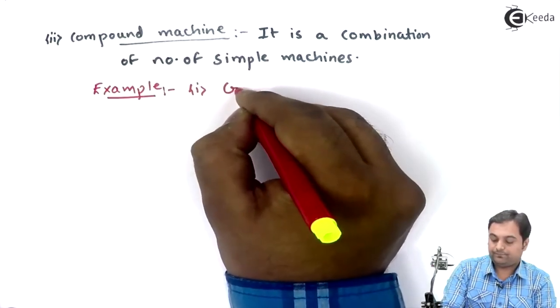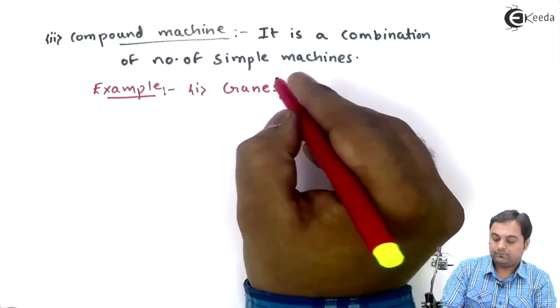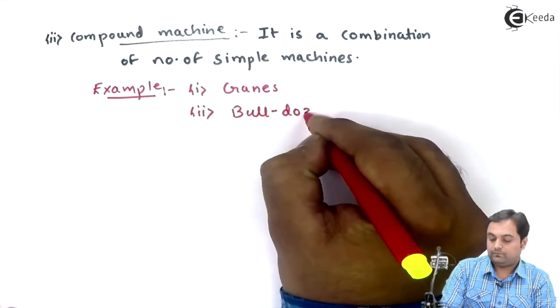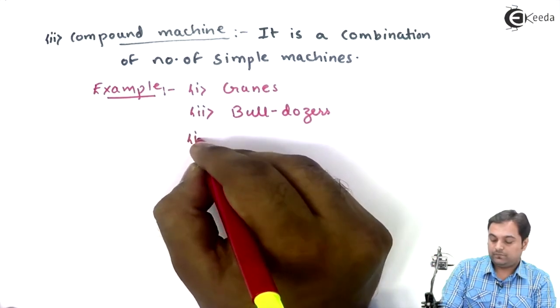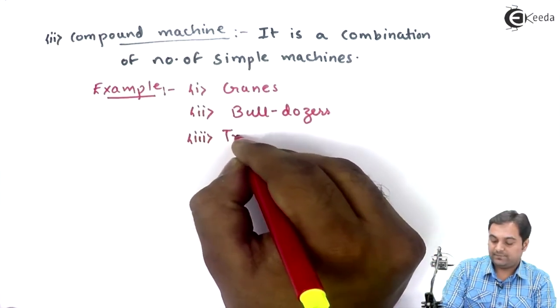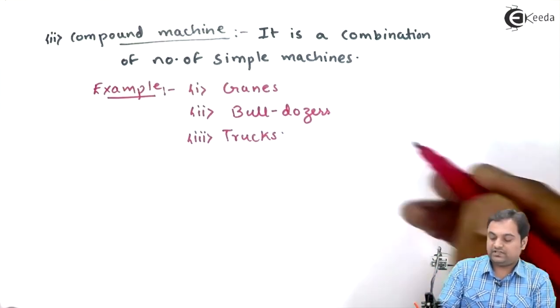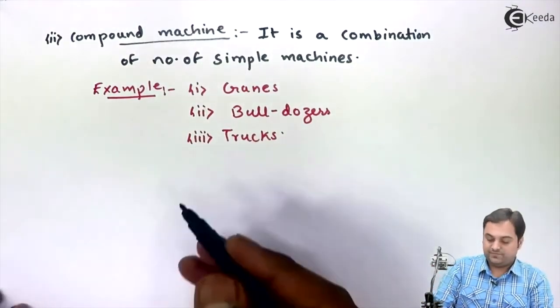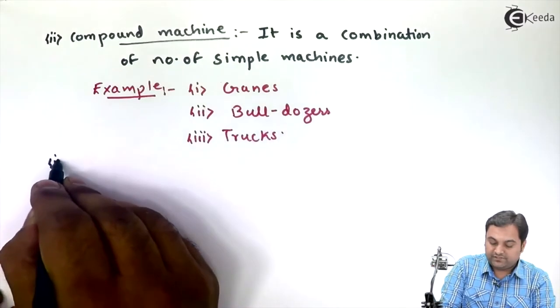Examples: cranes, bulldozers, trucks, etc. So these are some examples of compound machines where we have combinations of simple machines.